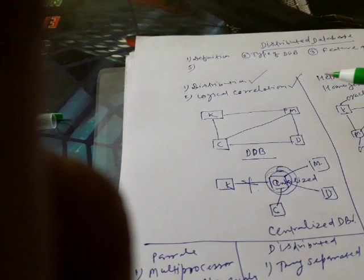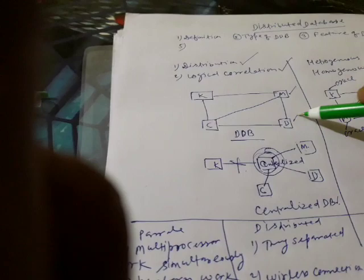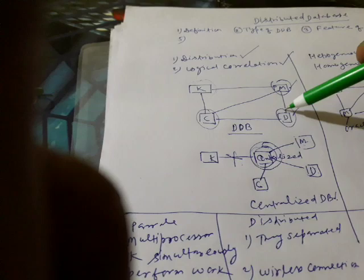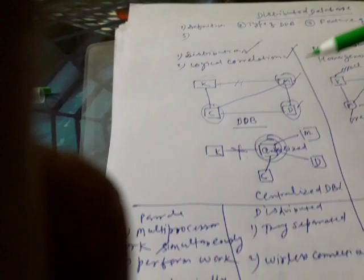The distributed database is based on two conditions: distribution and logical correlation. Distribution means your whole database is physically distributed at different locations. For example, a bank with branches in Mumbai, Delhi, Chennai, and Kolkata distributes Kolkata data in Kolkata, Mumbai data in Mumbai, and so on. They are connected with each other using some network topology, which can be wireless.